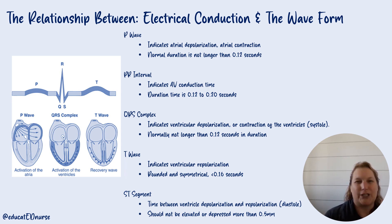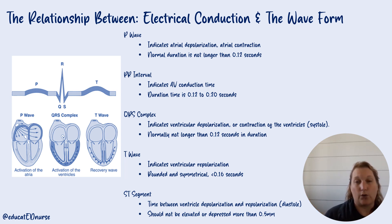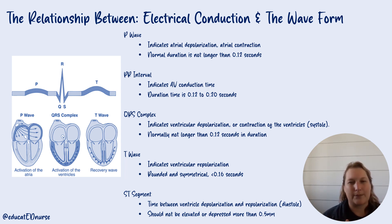The timing on the P wave should not be any longer than 0.12 seconds, which is three little boxes on the EKG. The PR interval is AV conduction time — how long it takes to travel across the atria over to the AV node. It should be between 0.12 and 0.20 seconds, or three to four little boxes. One little tip: even though it's called the PR interval, you start measuring at the beginning of the P wave and measure all the way to the start of the QRS, so I always remember it as the PQ interval.